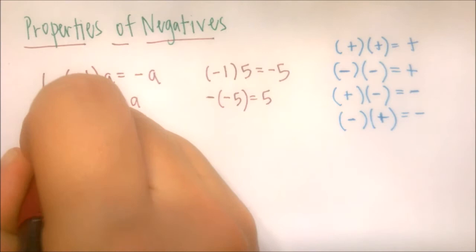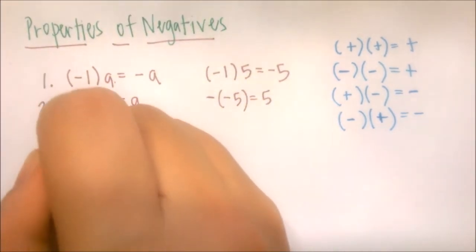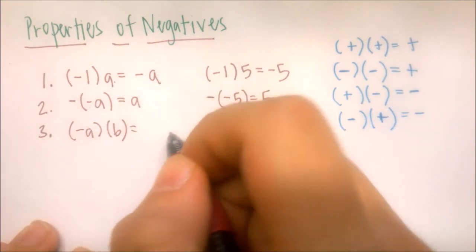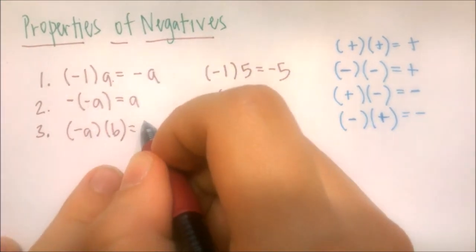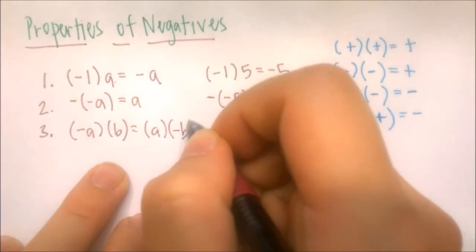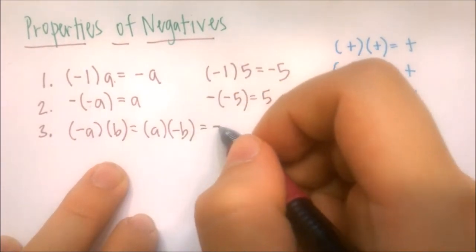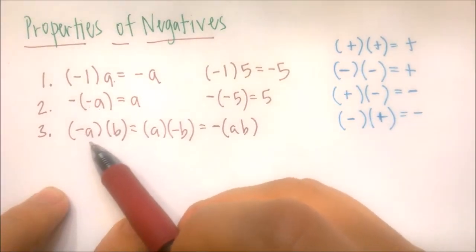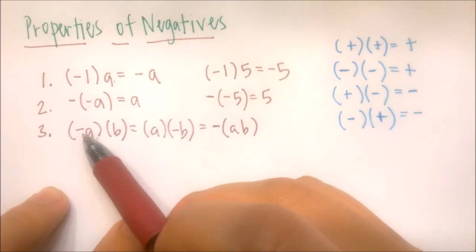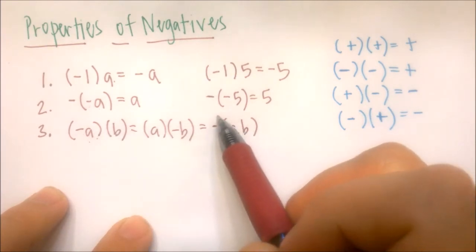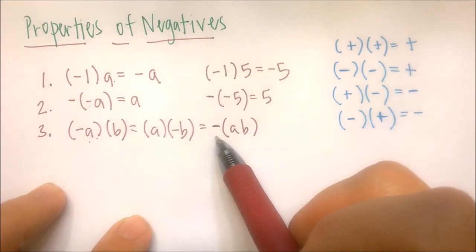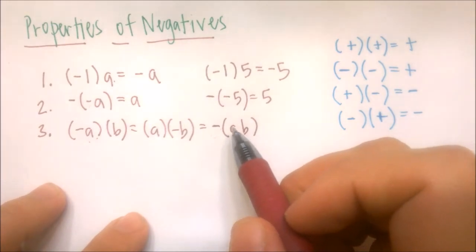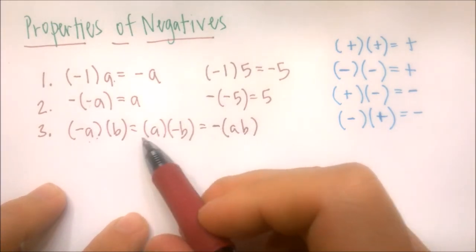The third property is that negative a times b is the same thing as a times negative b, which is just the negative of a times b. When multiplying, this negative can be moved around — we can pull it to the front. Note that it would be different if this were addition or subtraction, but in multiplication we can move the negative around and it's the same thing.